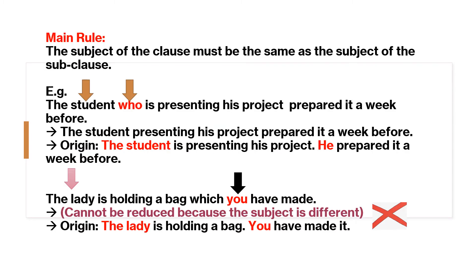The subject of the clause must be the same as the subject of the subclause. For example, 'the student who is presenting his project prepared it a week before' becomes 'the student presenting his project prepared it a week before.' The original sentences are 'the student is presenting his project' and 'he prepared it a week before' — the student and he refer to the same person. However, 'the lady is holding a bag which you have made' cannot be reduced into a phrase because the subjects are different: 'the lady' and 'you' refer to different persons.